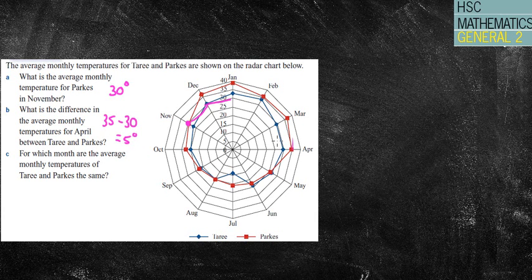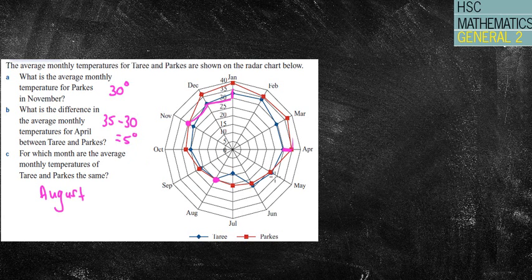Another way to read it: in April the two lines are simply one line apart, and each line represents five degrees, so it's five degrees. For which month are the average monthly temperatures of Tyree and Parks exactly the same? Looking at the chart, they appear exactly the same in August. Checking May — you can just see it's a bit different there, though it could be debatable. I'd go with August. That's pretty much your radar chart — not too challenging!